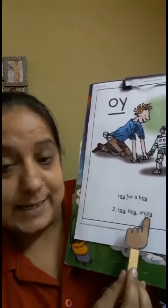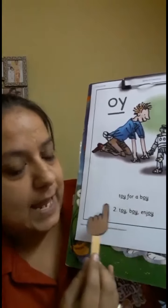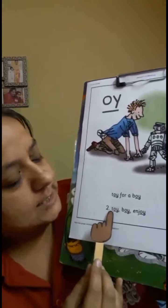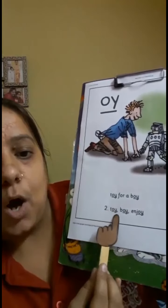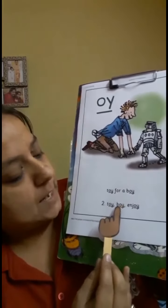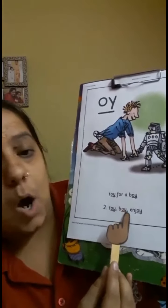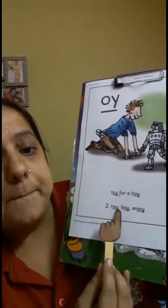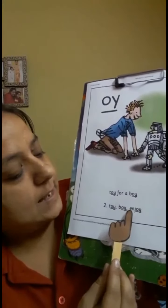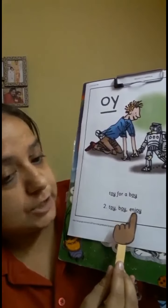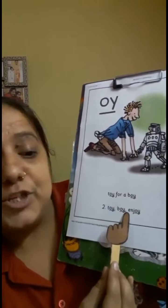Let's say once again. T-OI — Toy. B-OI — Boy. E-N-J-OI — Enjoy.